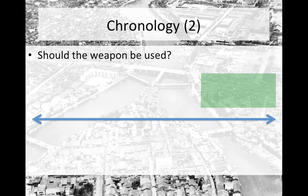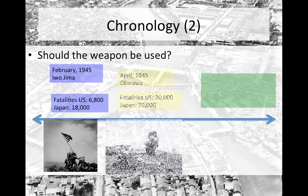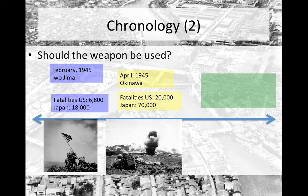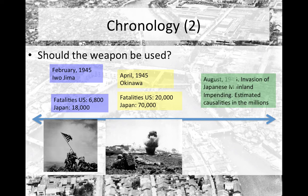The weapon was created, but questions began to arise as to whether the United States should use it. In February and April of 1945, the United States encountered two of its bloodiest battles in the war — on Iwo Jima and Okinawa — where U.S. forces encountered high numbers of casualties and the Japanese encountered even higher numbers. When invasion of the mainland was being prepared in August of 1945, it was estimated that an invasion would cost over a million American servicemen and women their lives, and even more Japanese lives.